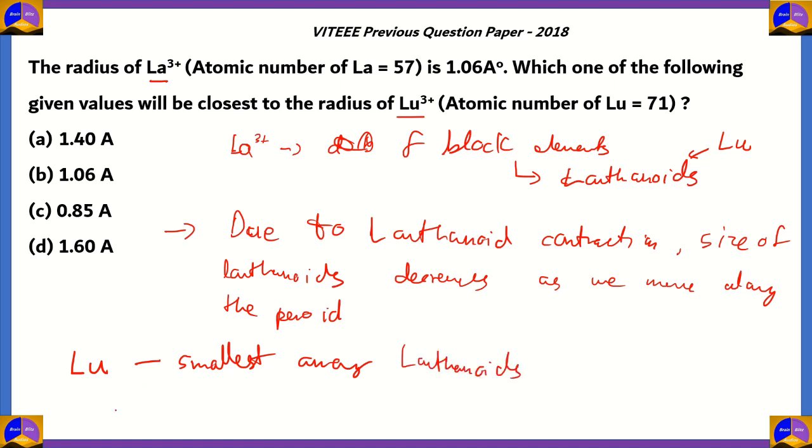And not only that, the form given here is a positive ion. The positive ion usually is smaller than the atom of that same element. Therefore, from these deductions, the value of the radius of lutetium will be lesser than 1.06 angstroms.